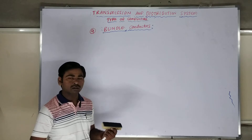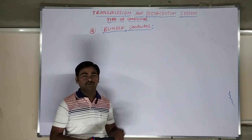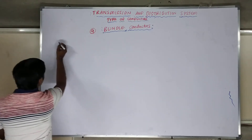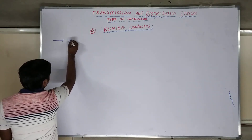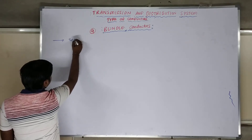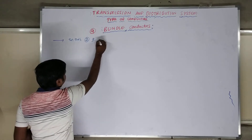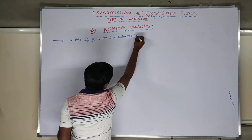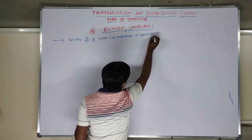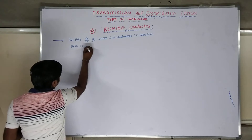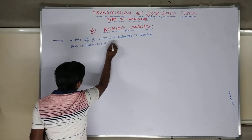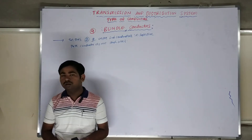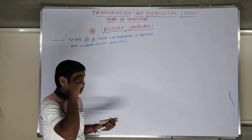Bundled conductors are conductors where in each phase we have two or more sub-conductors. In a single phase, these conductors do not touch each other. Compare this to standard conductors where all conductors are touching each other — in bundled conductors, they must not touch each other.